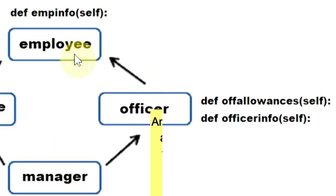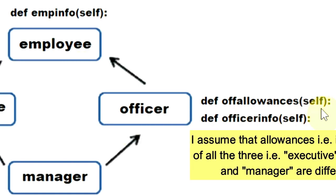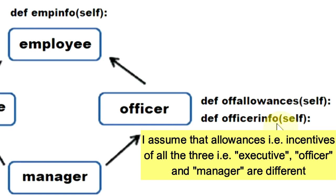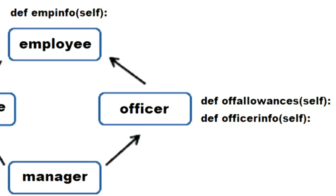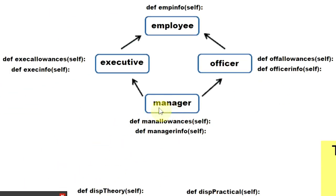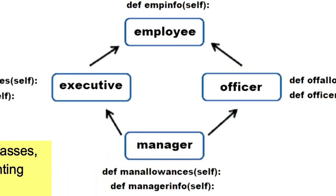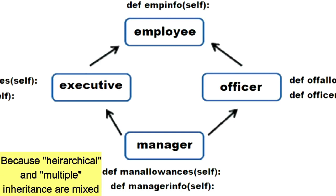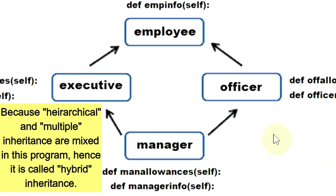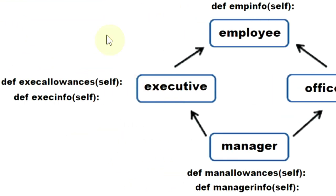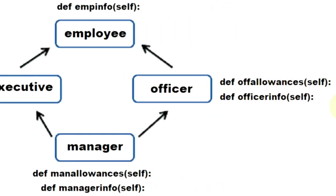The Officer class also inherits Employee. It has two functions: ofAllowances which calculates officer allowances, and officerInfo which displays them. The object of Officer class invokes empInfo to display code, name and salary, plus its own two functions. The Manager class inherits both Executive and Officer classes and has manAllowances and managerInfo functions. The object of Manager class can access all functions from Manager, Executive, Officer, and the base Employee class.